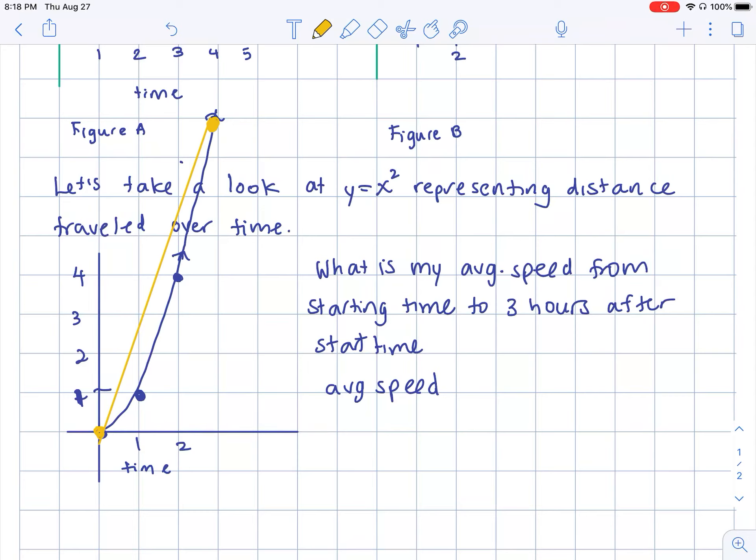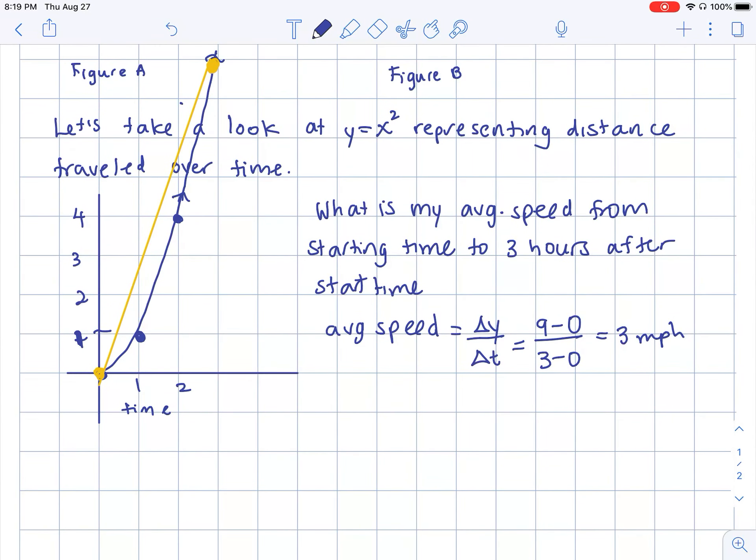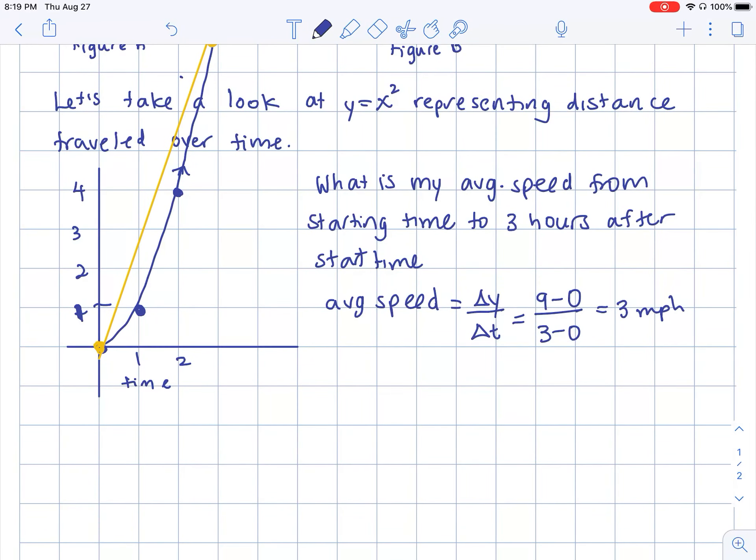And so if I use that start and end time point to then calculate my average speed, I would have that my average speed is the change in y over the change in time. So the change in y represents my change in distance. So my change in distance in this case is my y values. So nine minus zero over a unit of measure of time of three minus zero. And so let's assume it's miles per hour. If we calculate that, we then get three miles per hour. So from that graph, we can conclude that over the course of this travel, I measured about a three miles per hour average speed. So what I just graphed was the slope of the secant line. And so I can always use the slope of the secant line to find average speed. But the question is, how do I find instantaneous speed?